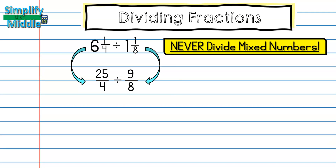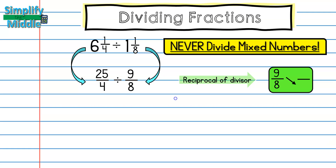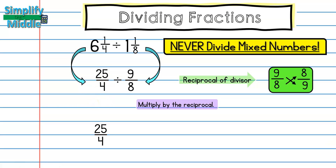We're going to do the same as the previous examples: find the reciprocal of the divisor. The reciprocal of 9/8 is 8/9, and now I'm ready to multiply by the reciprocal. My dividend 25/4 doesn't change, so I multiply 25/4 by 8/9, giving me 25 times 8 in the numerator and 4 times 9 in the denominator.